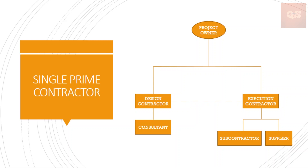The first and most often used arrangement is called the Single Prime Contractor. Under this arrangement, the owner will first contract with a design professional or design contractor to perform the requisite planning and design works. The design contractor can utilize specialized consultant help to carry out the designing of some specialized works. Once the design is completed, the owner then contracts with a single contractor to carry out the execution part of the project. All procurement and subcontractors come under this single prime contractor, which insulates the owner to a limited extent from claims or disputes arising from these suppliers or subcontractors.